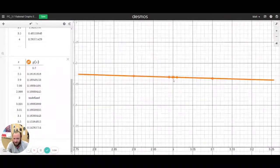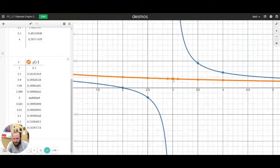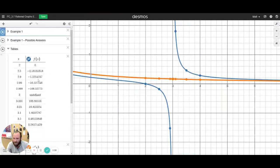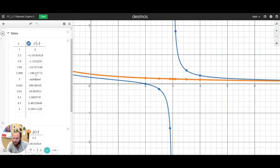but it's undefined in a different way than the blue one. If we look at f of x, and we look at the table of outputs as we get closer and closer to 3, you can see, watch what's happening. negative 1, negative 16,